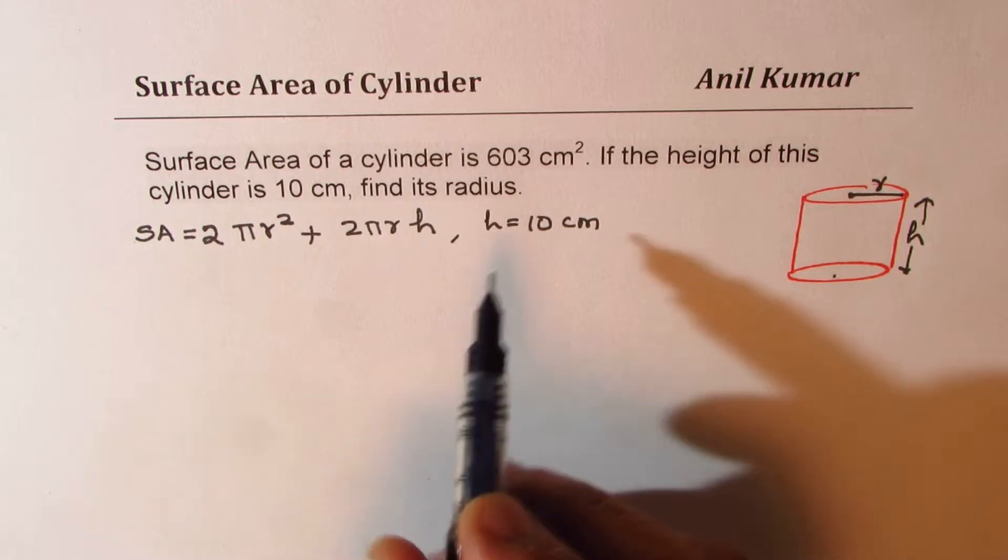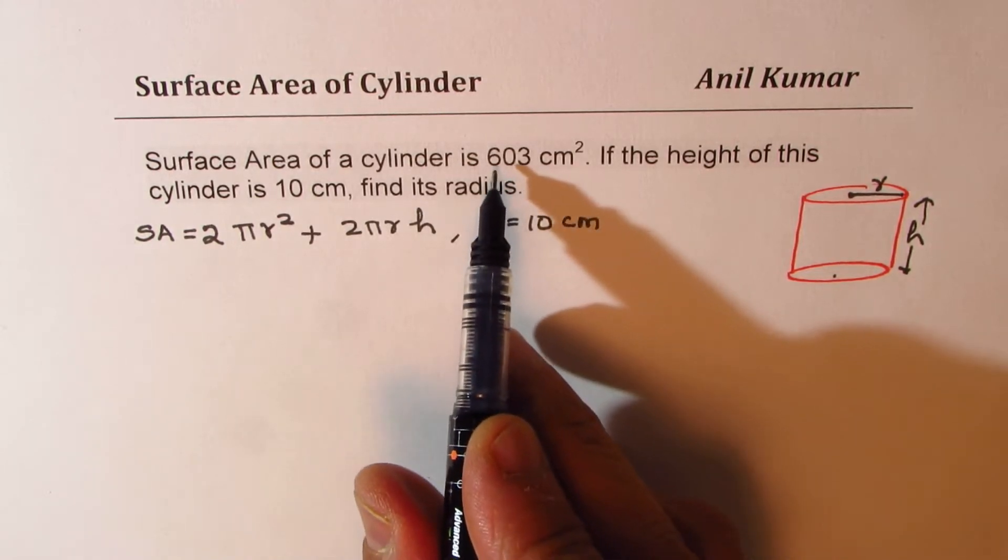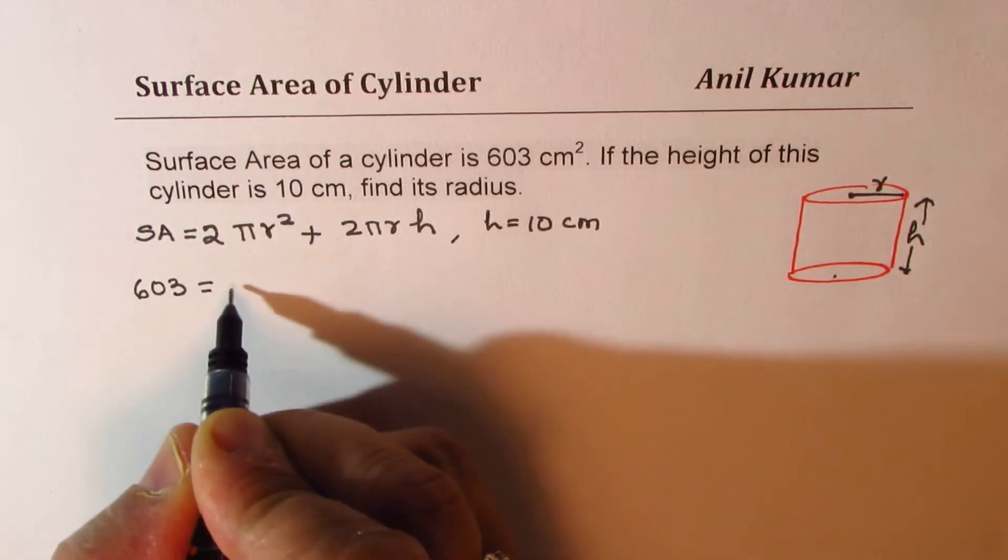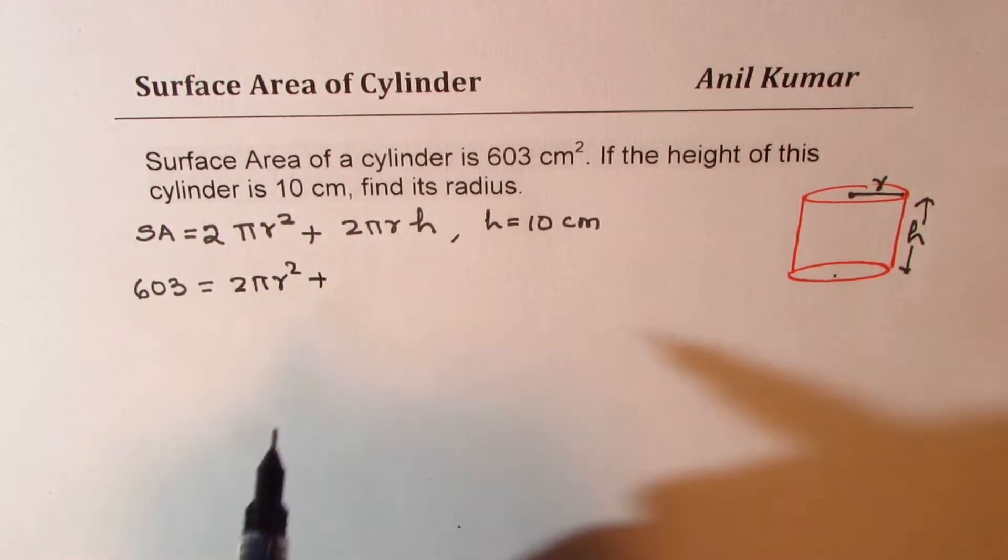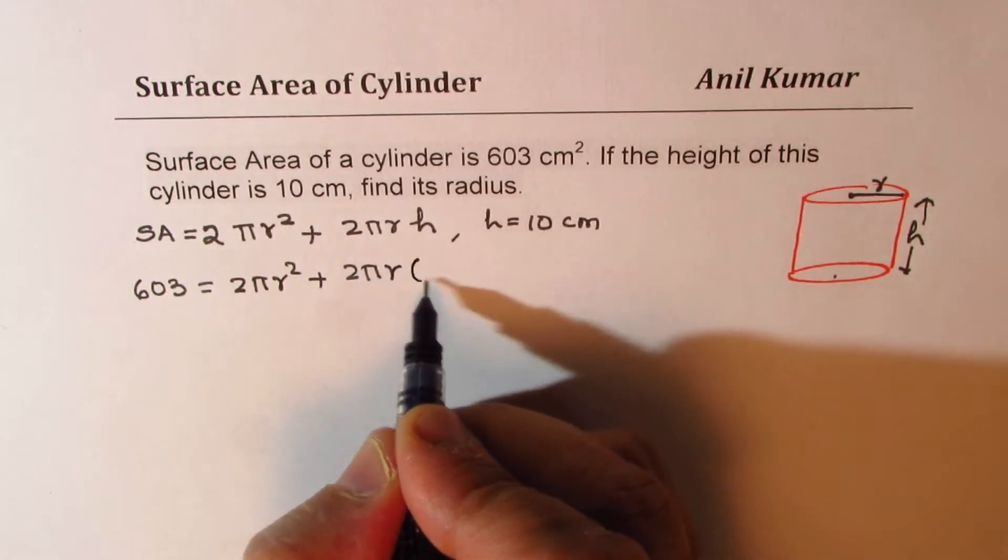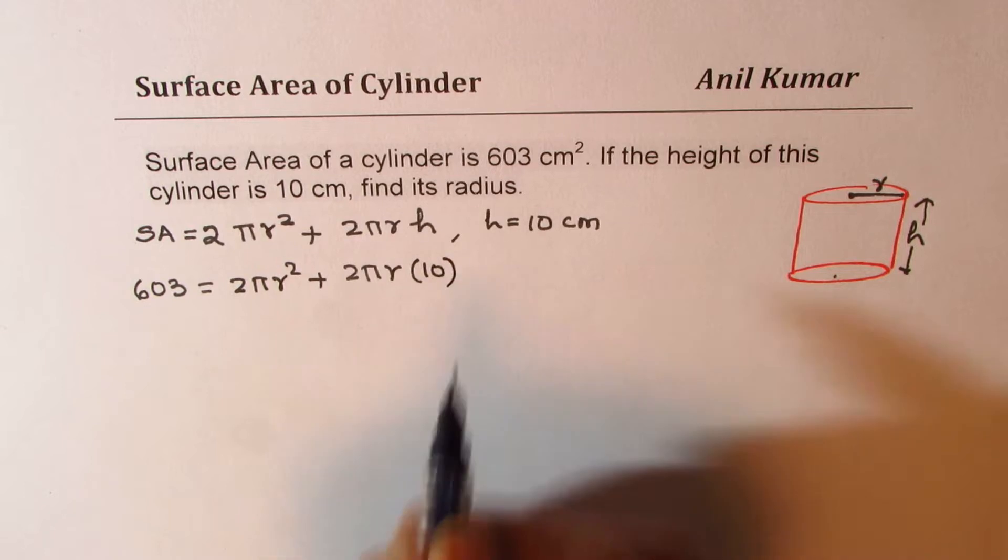Now, if I substitute what is given to us, what do we get? We get 603 equals to 2πr² plus 2πr times h, which is 10. So let me write 10 here.